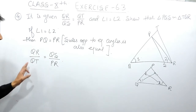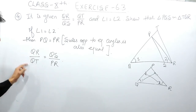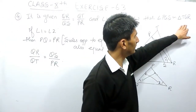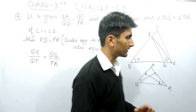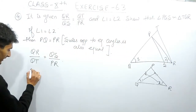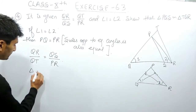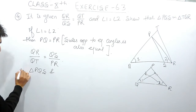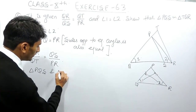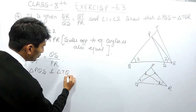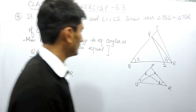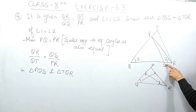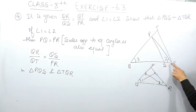This rewriting is important because if this equation is not written in this form, it won't be possible to prove these two triangles similar. Now let's prove triangle PQS and triangle TQR similar.